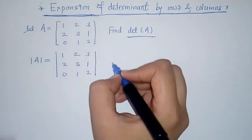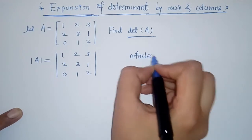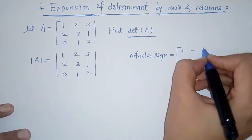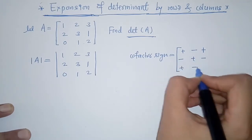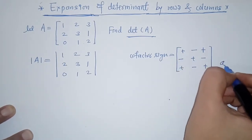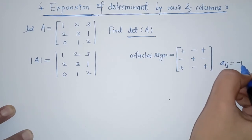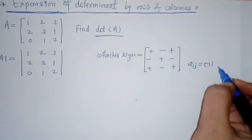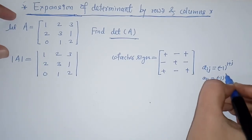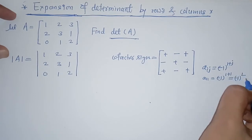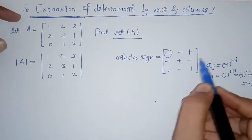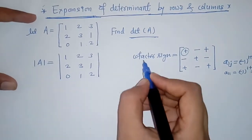First we will write the cofactor sign matrix. We know how we got the cofactor signs — by using this formula: for element a_ij, we write (-1)^(i+j). So for a11, this is (-1)^(1+1) = (-1)^2 = 1, which gives a plus sign, and so on.